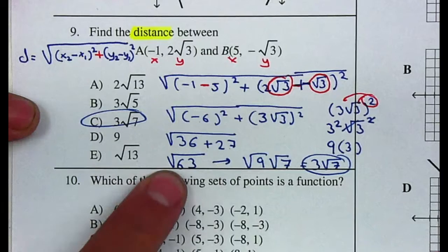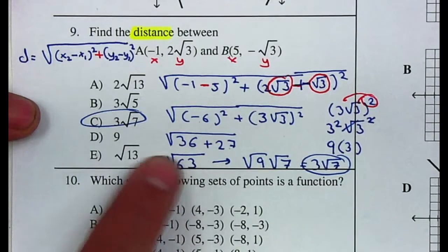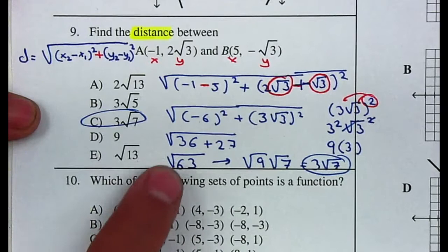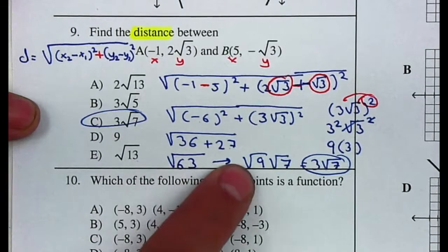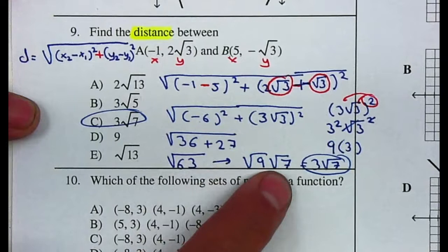Now remember you can also do the factor tree for 63, that's another way of doing it, or you can just think of the perfect squares that go into 63. In this case it will be 9, and then that will be the 7.